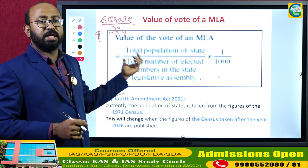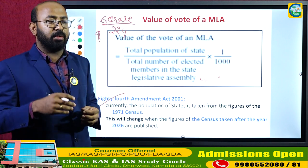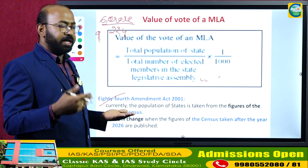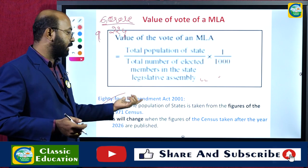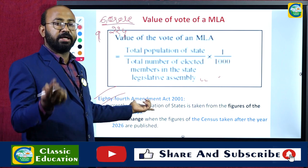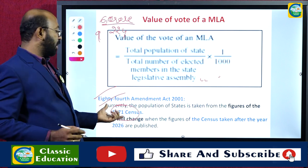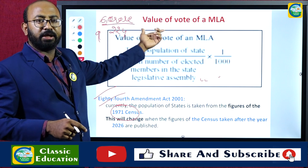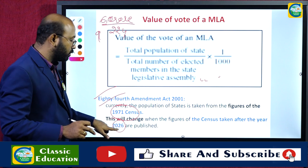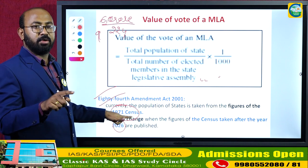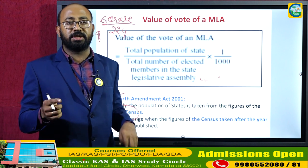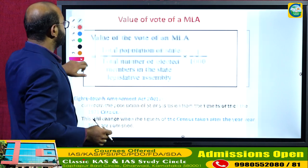The census data referred to by the Election Commission uses the population figures of 1971 for determining MLA vote values. Through the 84th Amendment Act of 2001, it was fixed that the 1971 census population should be considered until 2026. After 2026, the base year will become 2031, as the next census year will be 2031.